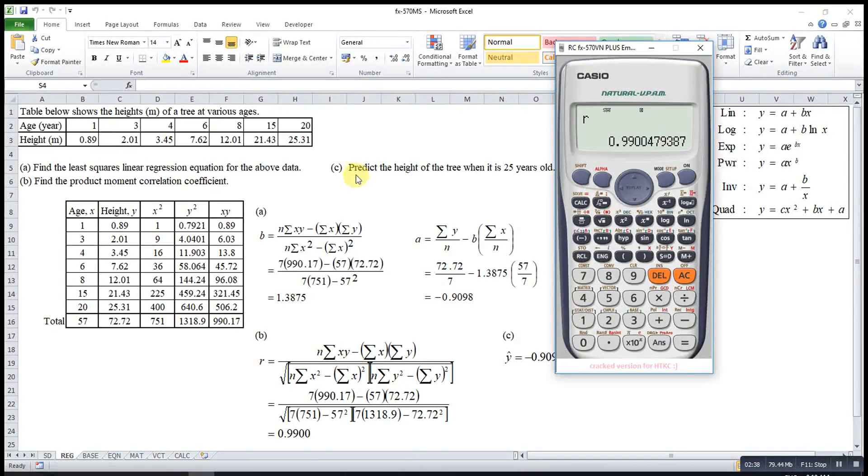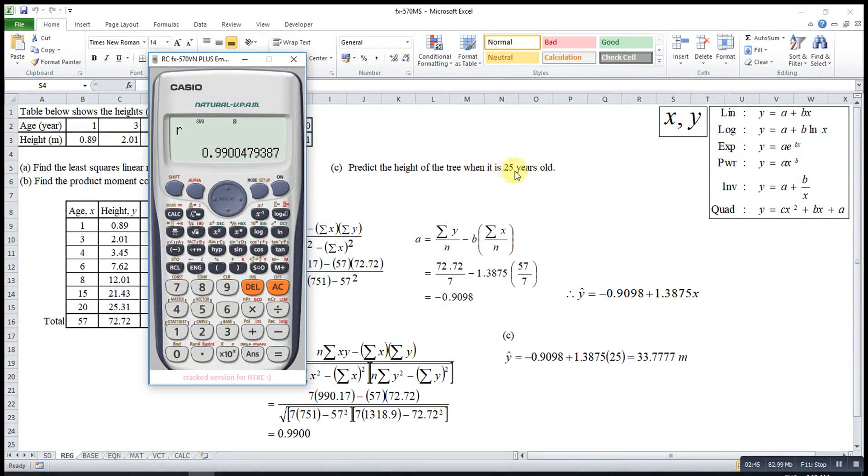If let's say the question asks us to predict the height of the tree when it is 25 years old, usually we will substitute this 25 into the equation, then obtain the value. And then for this calculator, we can press this value, then shift 1, regression, then we choose y hat 5. Okay, also can obtain the value.